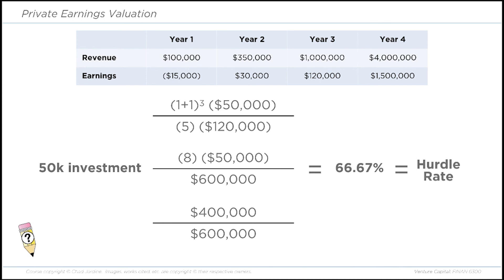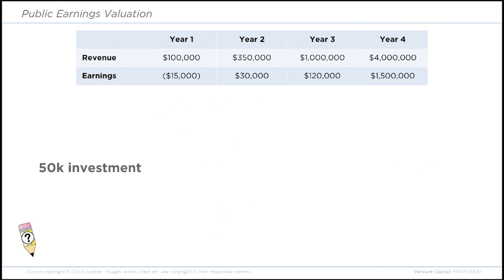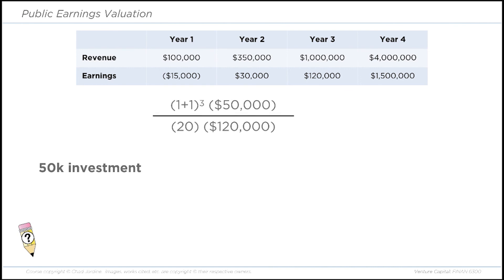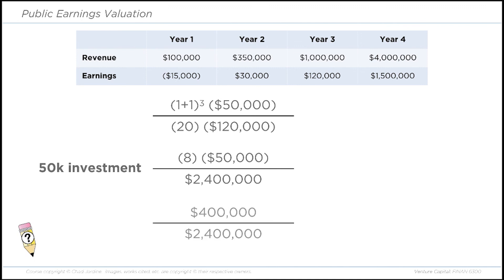That sounds pretty steep, so let's look at another example. Everything is the same except we're now looking at a public company. The investment stays at $50,000, but this time we use an earnings multiple of 20 instead of 5. So we still have 8 × $50,000 = $400,000 on top, but now we have $2.4 million in the denominator. That gives us a hurdle rate of 16.67% — much more affordable and doable for an investor. Because the public company is valued higher due to better liquidity, the investor needs to own much less at exit to achieve their desired IRR.